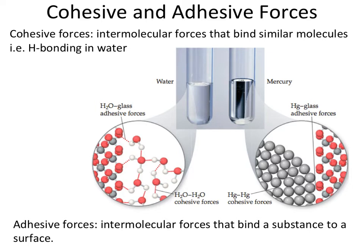Looking at the examples here, we have water and mercury in two separate test tubes. The curvature in the water is U-shaped, while the mercury curvature is basically inverted. The cause of these different shapes in the glass container has to do with cohesive and adhesive forces.